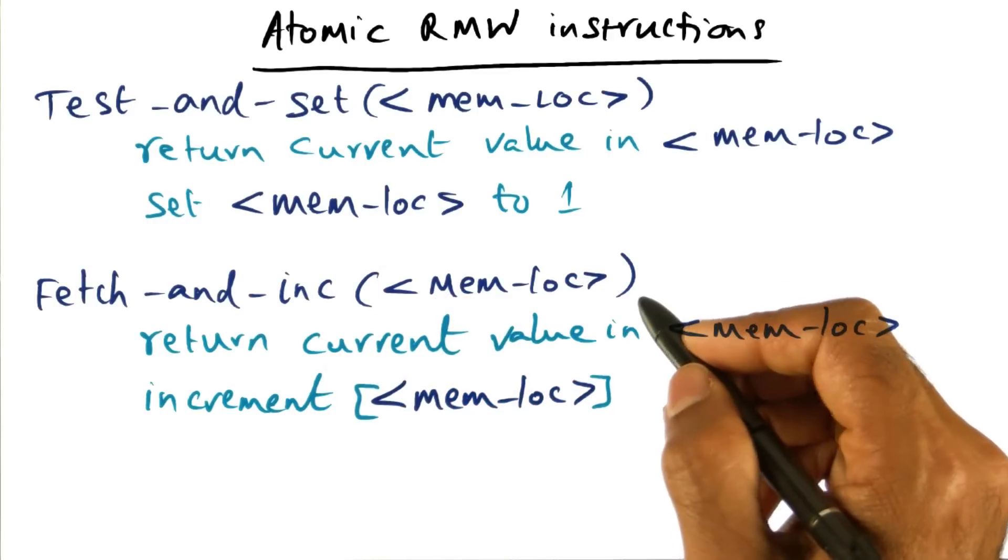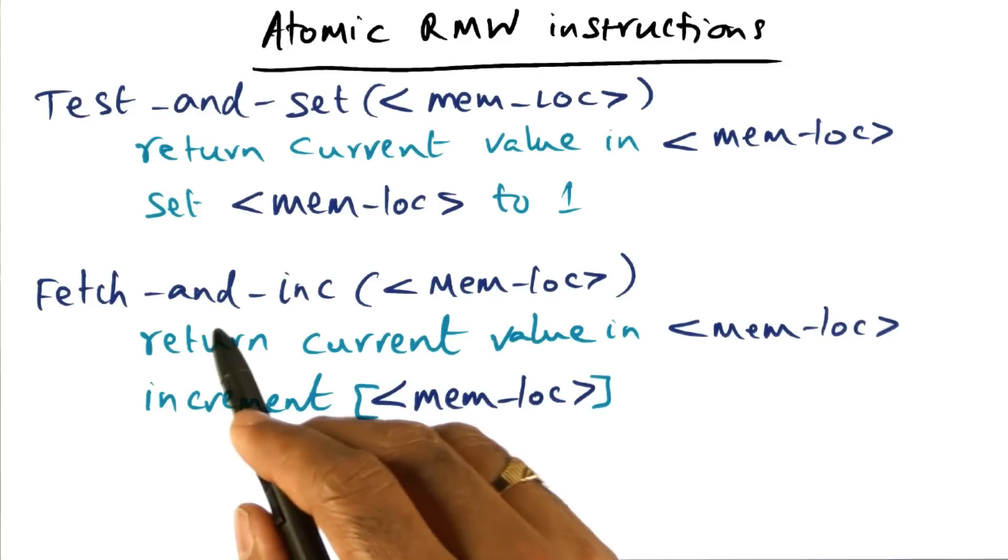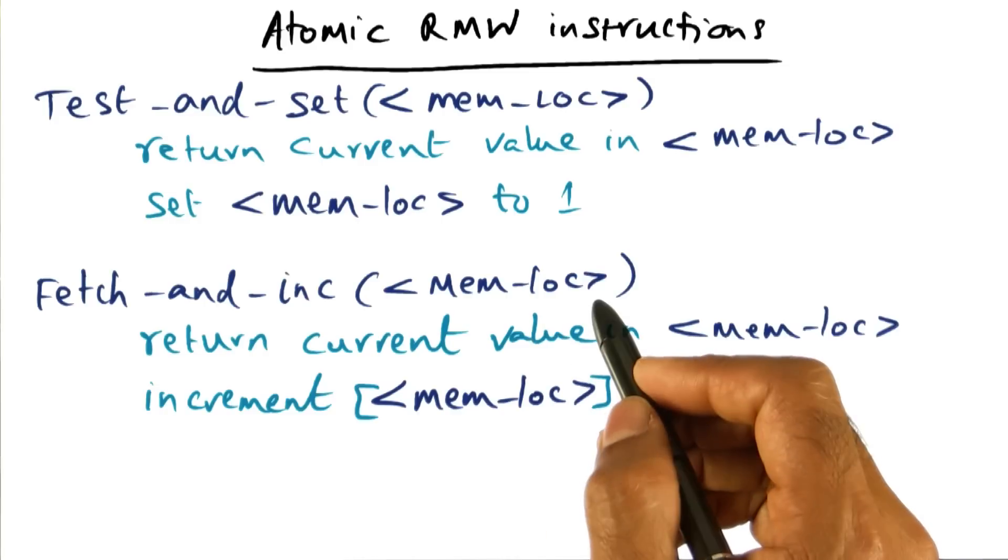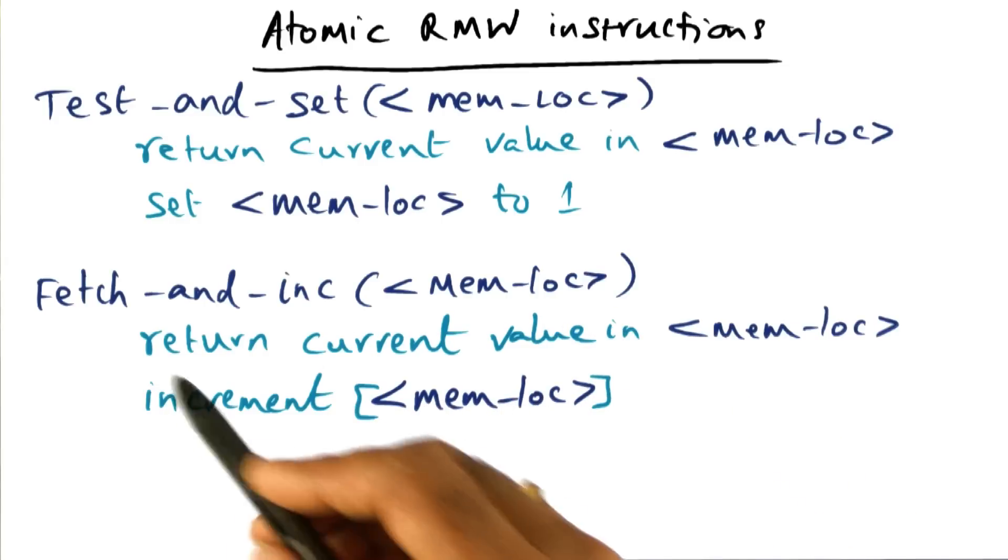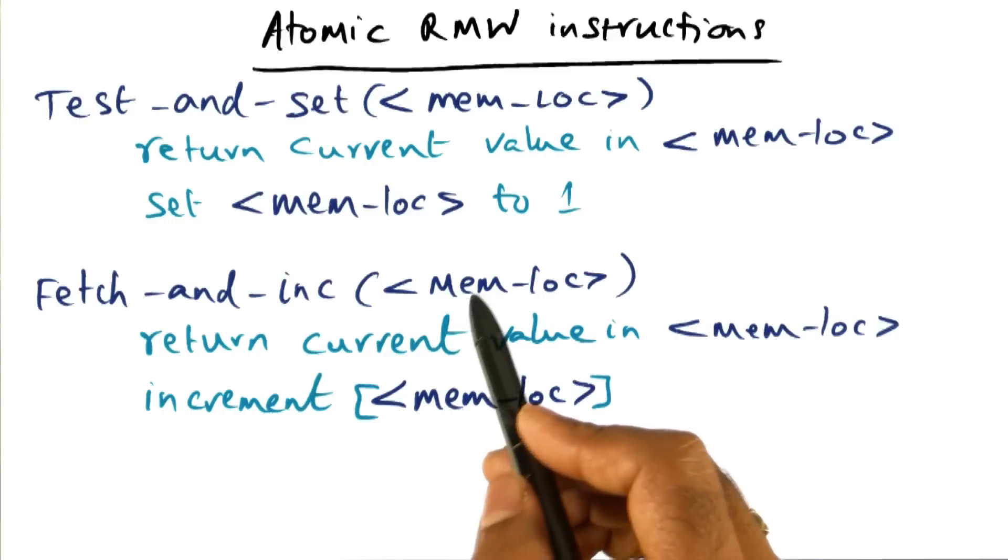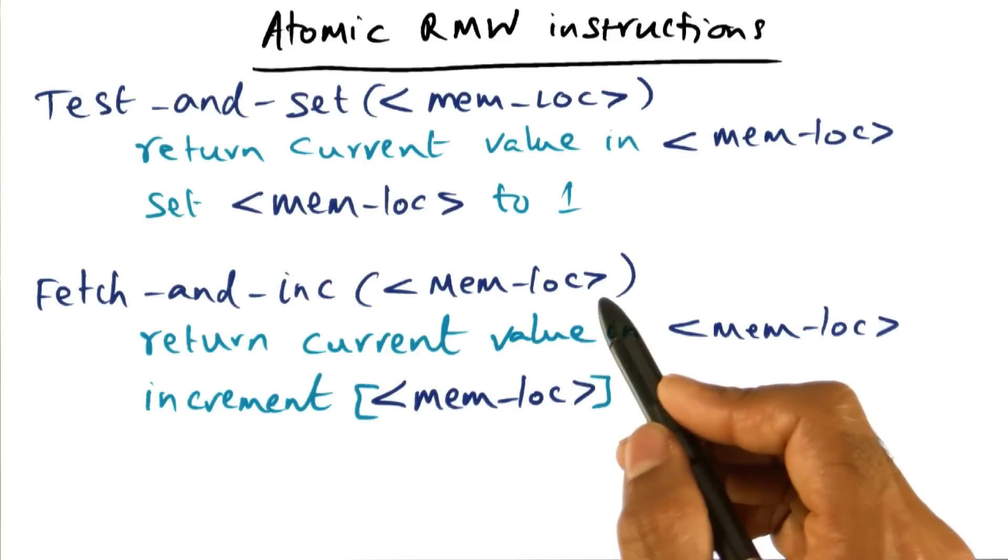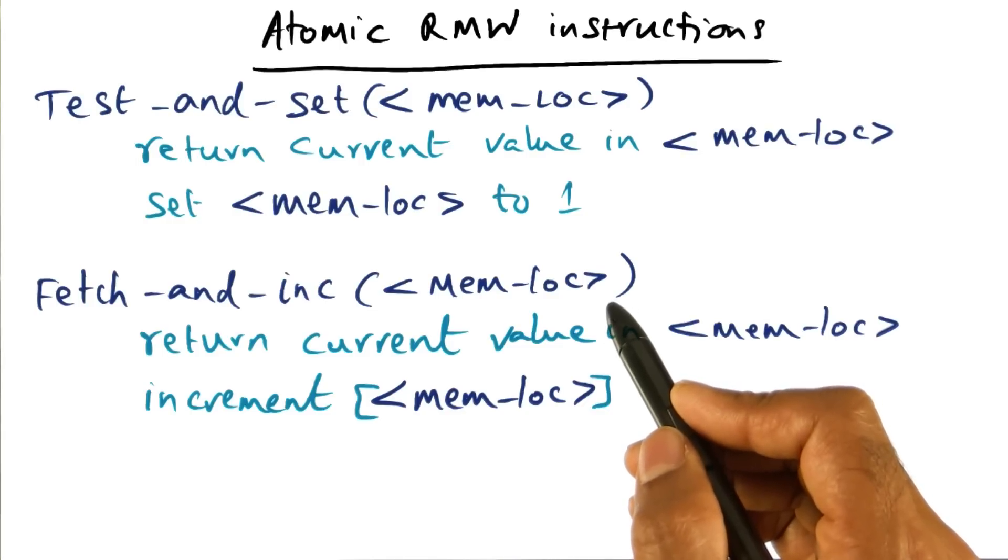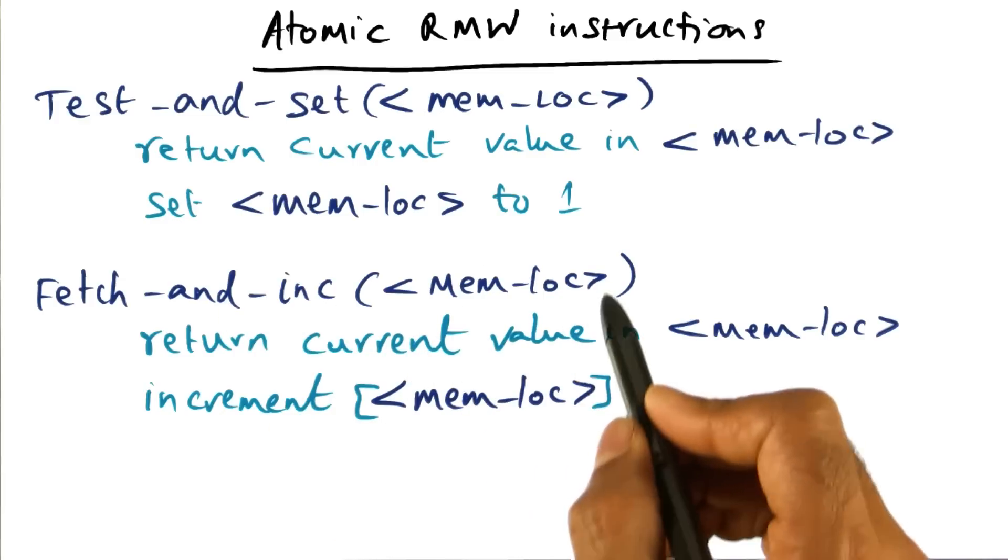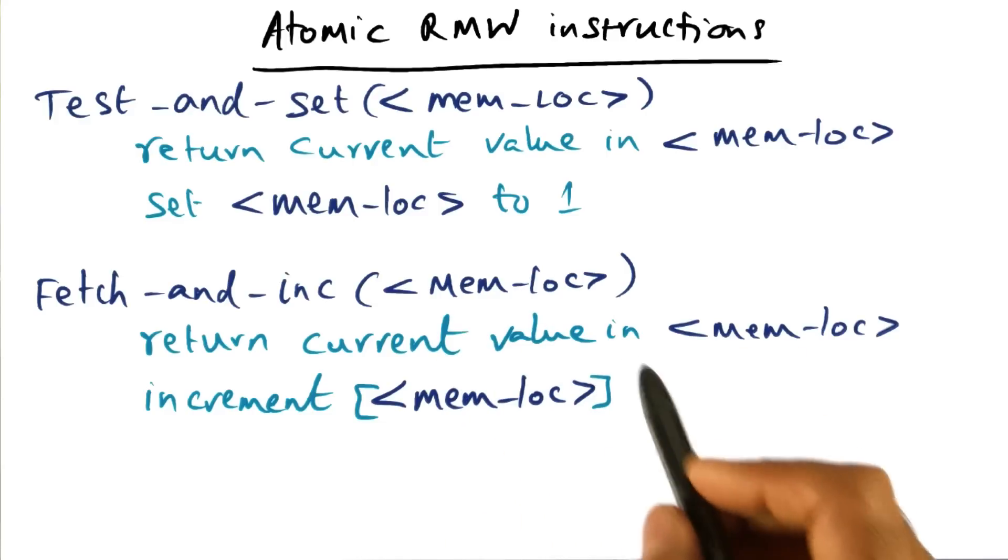Another atomic read, modify, write instruction that has been proposed and or implemented is what is called a fetch and increment instruction. And this takes on again a memory location as an argument. And what it is going to do is, it is going to fetch the old value of what was in the memory, and then increment the current value that is in the memory by one or whatever value. So it could be that this may take on an extra argument to indicate how much it is going to change it by. But in the simple version, it may simply increment the current value that is in the memory location by one.